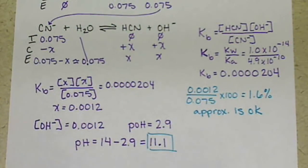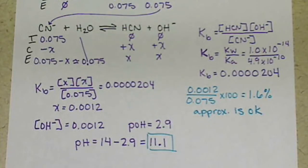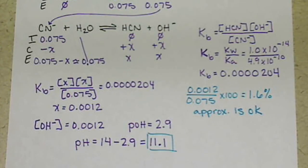The pH of our salt solution of 0.075 molar KCN is 11.1 — so it's fairly basic. When we reconvene for lecture again, I'll do another example so we can get more practice. And then in the last section of the book, we will learn a new definition for acids and bases and look at that very briefly.